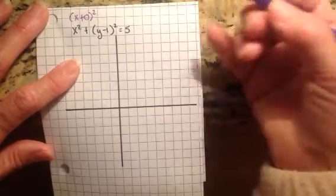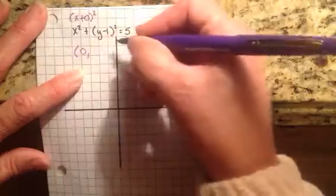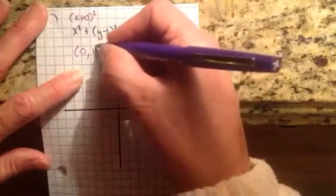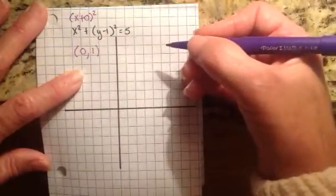So my center, in this case, opposite of 0 is going to be 0. And opposite of negative 1 is positive 1. So my center is going to be at 0, 1.